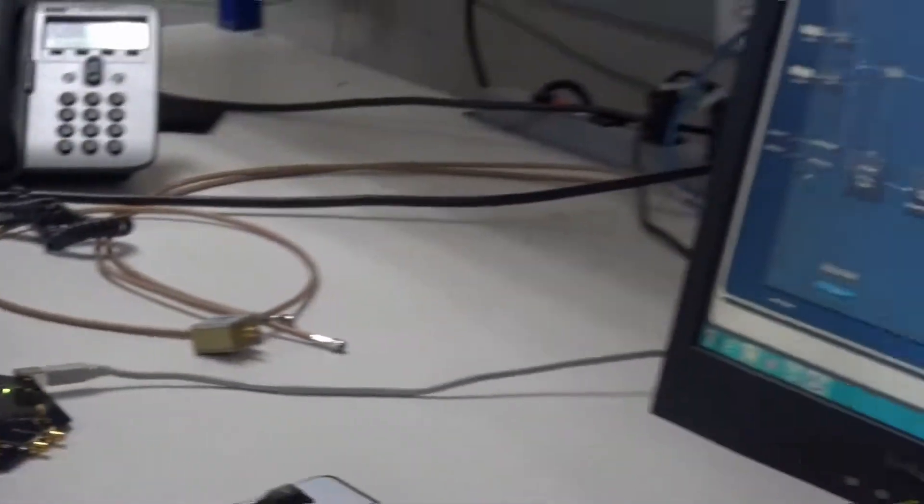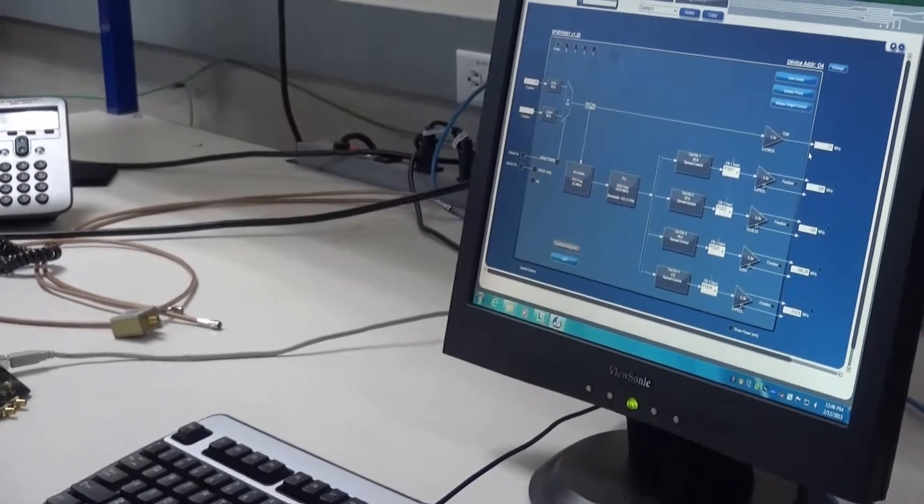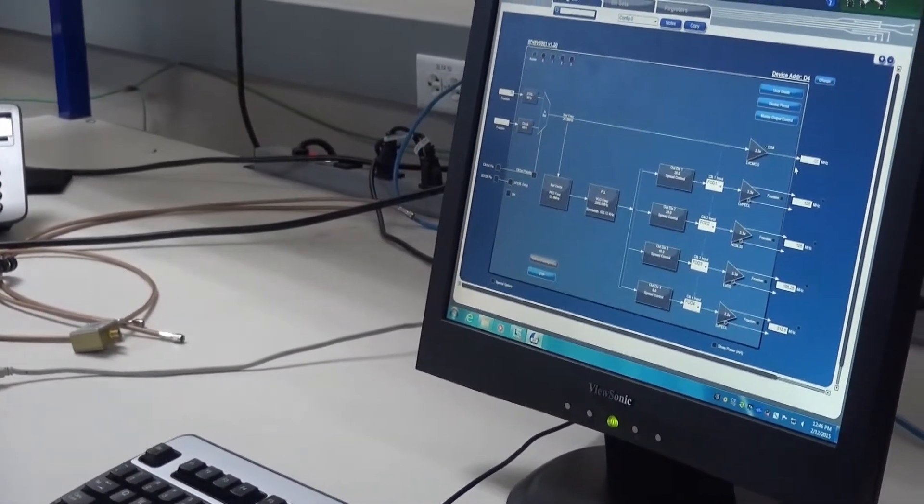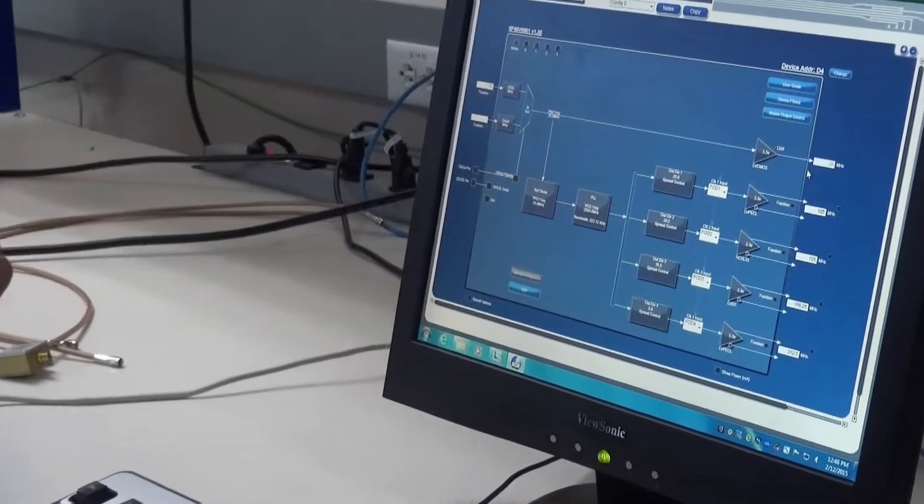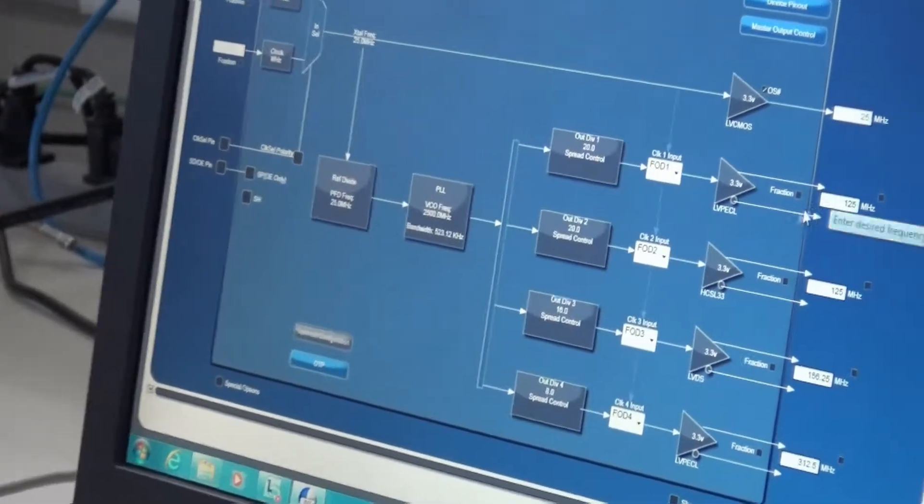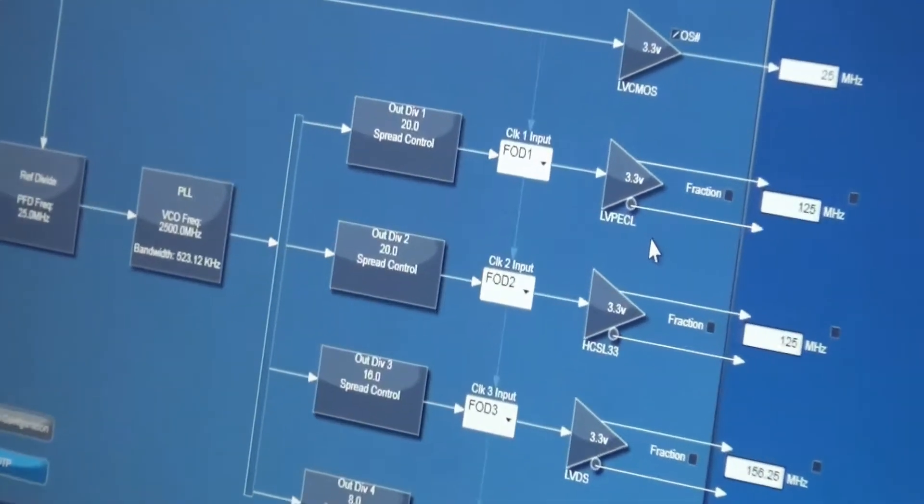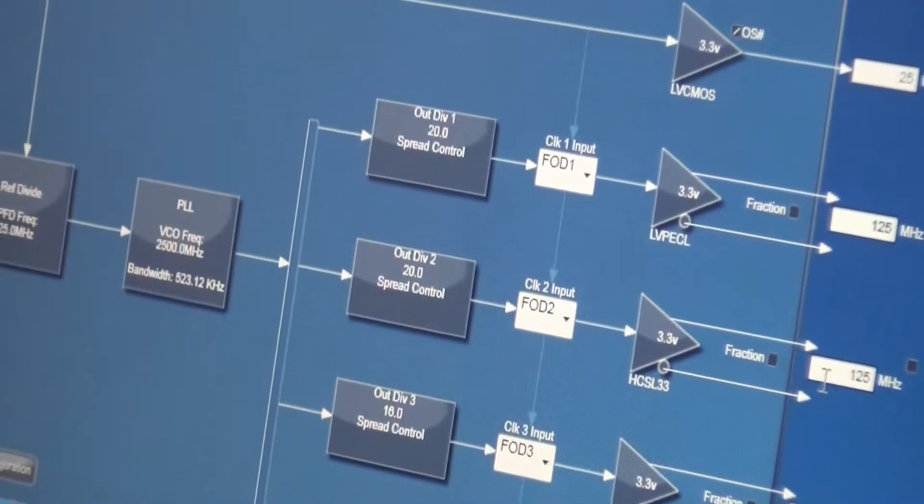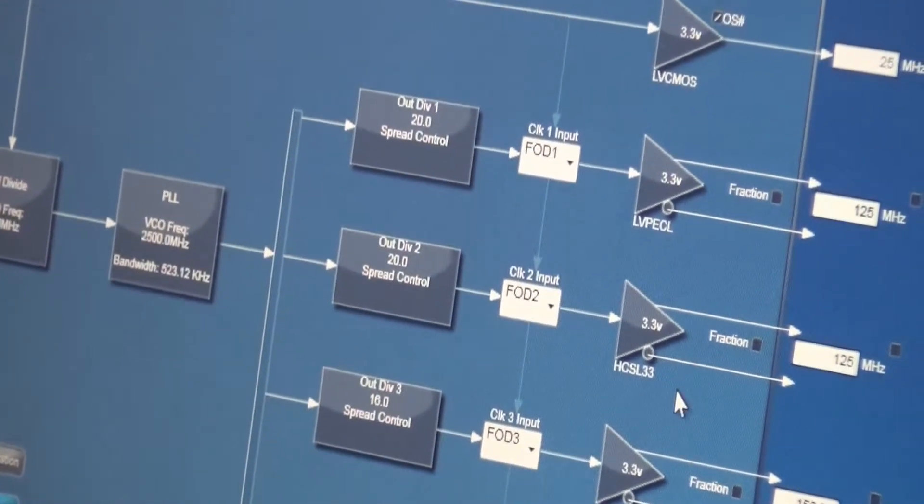This is the Timing Commander software which controls the VersaClock 5 device. As you see, I have it configured for 125 megahertz LVPECL output on output 1. On output 2, I have it configured at 125 megahertz HCSL output.